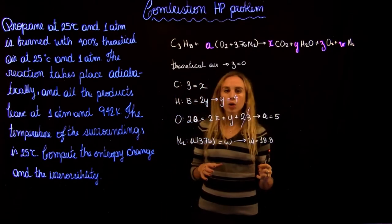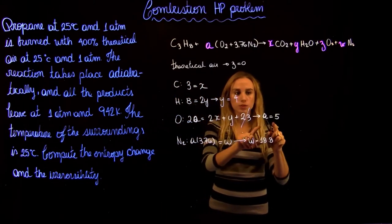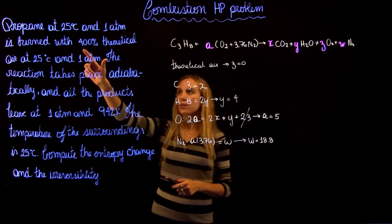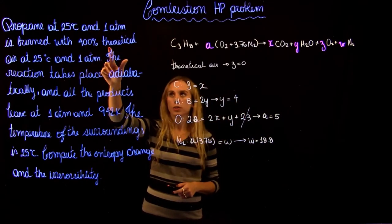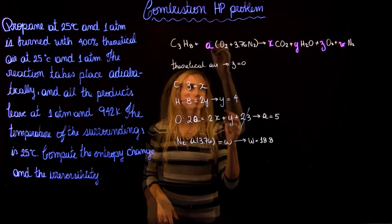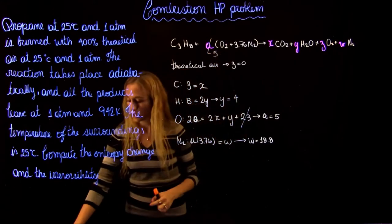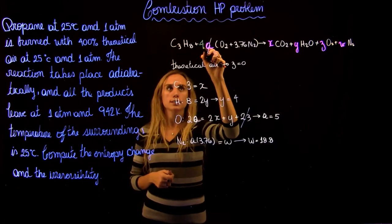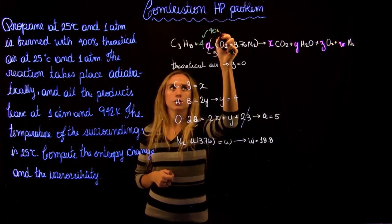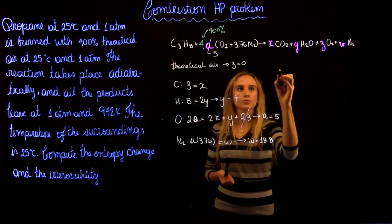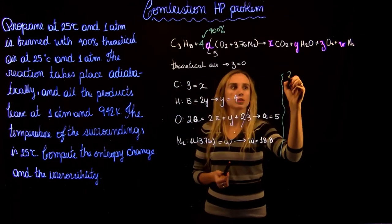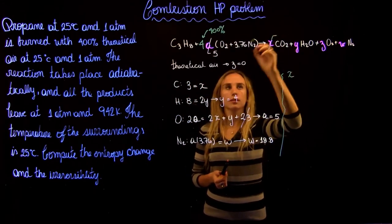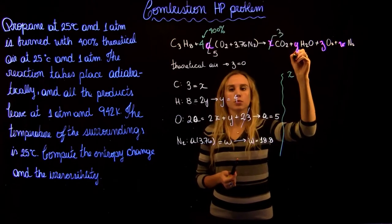So now we know how much theoretical air we're going to be using. It's 5. And we are told that we use 400% of theoretical air. So that means that this is going to be 5, and we're going to multiply this by 4 due to the 400% of theoretical air. Now we know that X won't change, so X is still going to be 3. Y is still going to be 4.